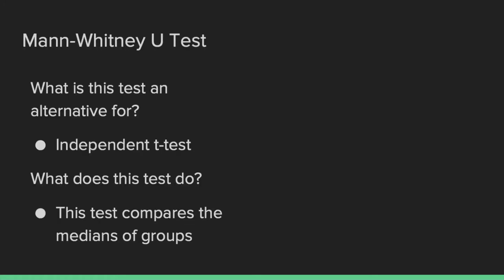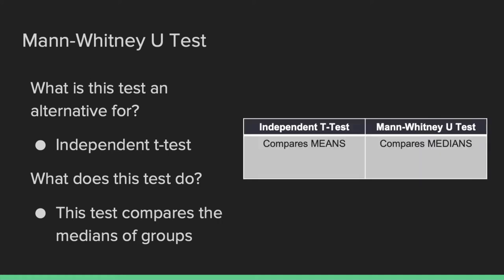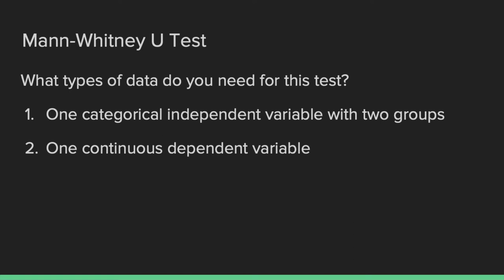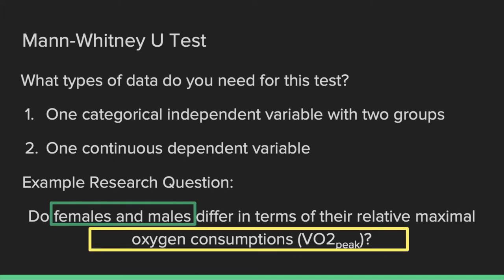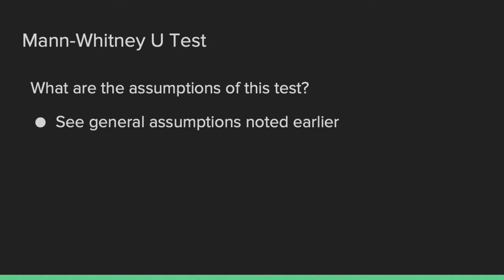The second test we're going to look at today is the Mann-Whitney U test. The Mann-Whitney U test is a nonparametric alternative for an independent t-test — it also compares two different groups, but instead of comparing means like a t-test, it compares the medians of each group. To run a Mann-Whitney U test, there needs to be one categorical independent variable with two groups and one continuous dependent variable. Our example research question is: do males and females differ in terms of their relative maximal oxygen consumption, otherwise known as VO2 peak? We have our categorical independent variable with two groups — female and male — and our continuous dependent variable, VO2 peak measured in milliliters per kilogram body weight per minute. There are no additional assumptions for this test beyond the general ones.